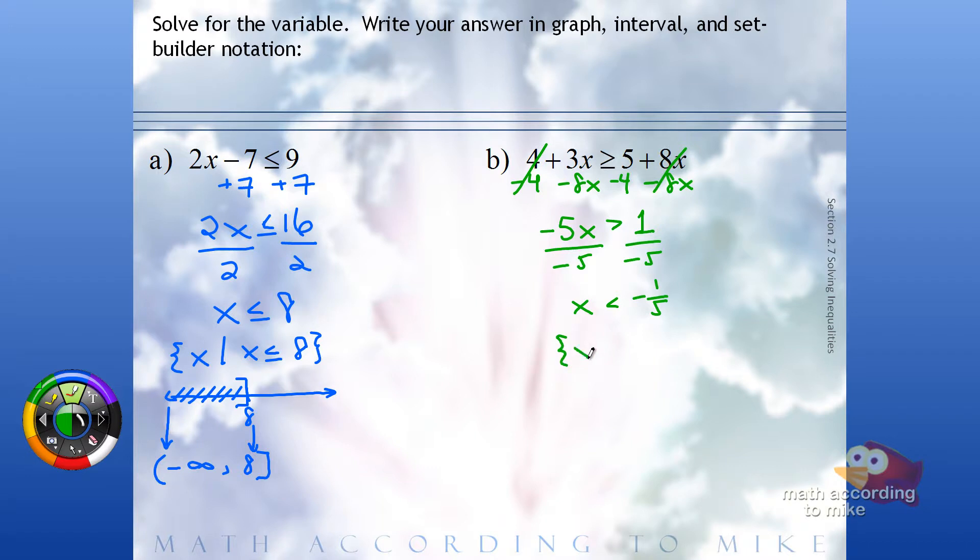So set builder. The set of all x such that x is less than negative 1 fifth.